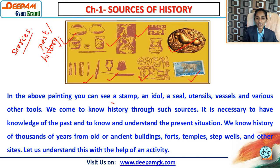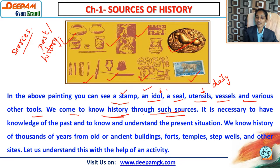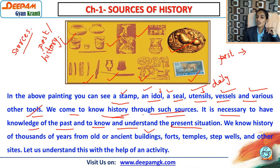In the painting shown, you can see a stamp, an idol (murti), a seal, utensils (vessels — things we use daily), and various other tools. We come to know history through such sources. The question is: which sources help us know history? So stamps, idols, seals, utensils, and various other tools are helpful to get information about history. It is necessary to have knowledge of the past in order to know and understand the present situation.